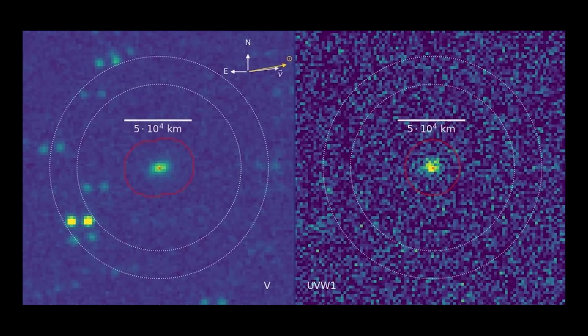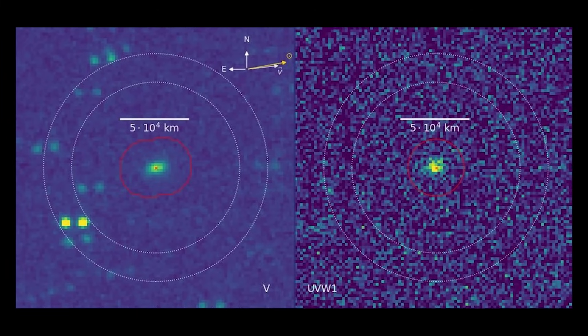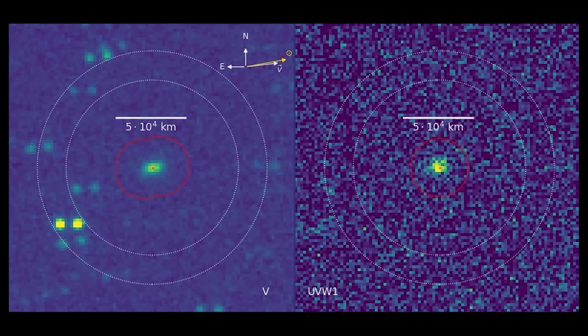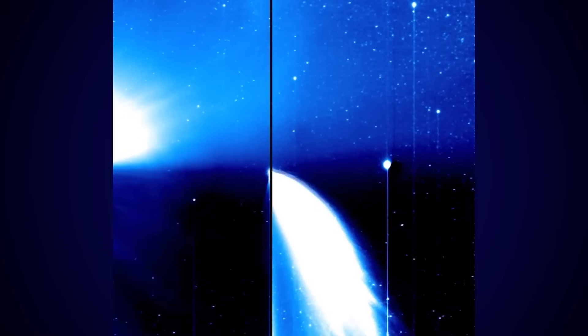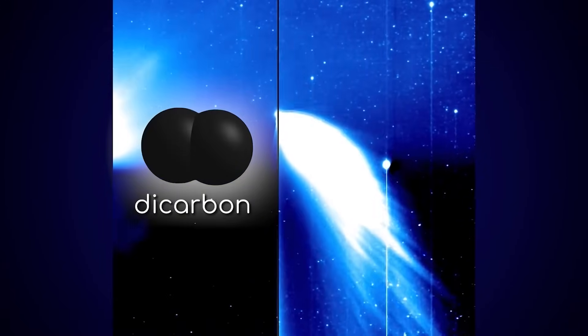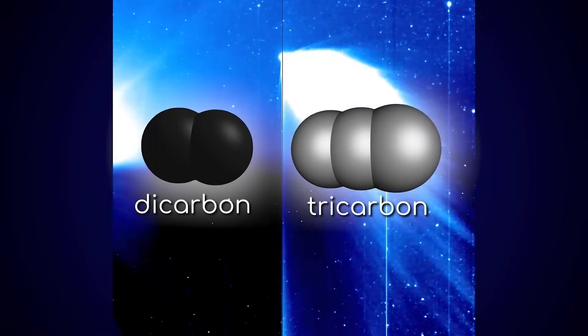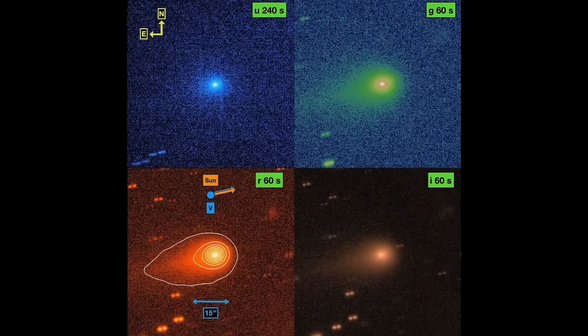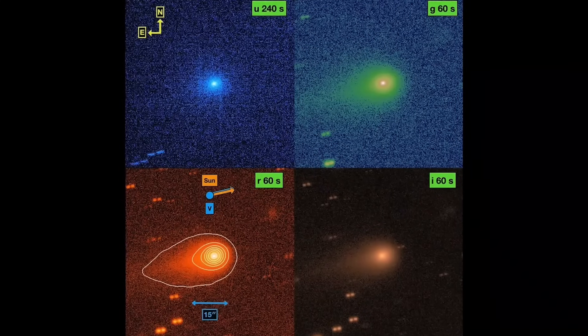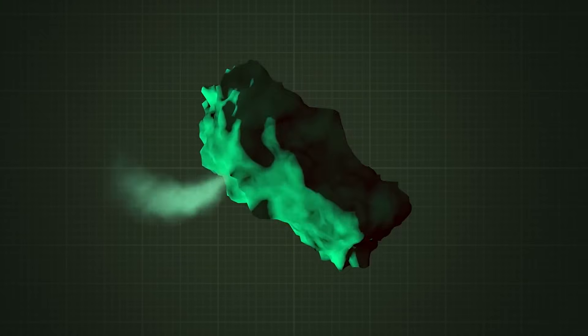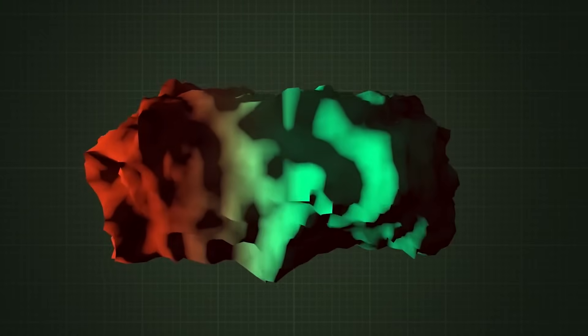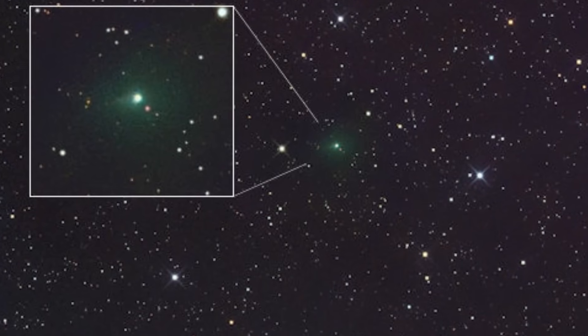One of the strange things about Atlas is its bright green color. It was first red, then suddenly turned green, something that usually comes from carbon molecules like dicarbon. But the amount of these molecules is low, and this change happened too soon, at a distance where such changes are not usually observed. Researchers say it might have changed from dust to gas, but they haven't fully explained it.